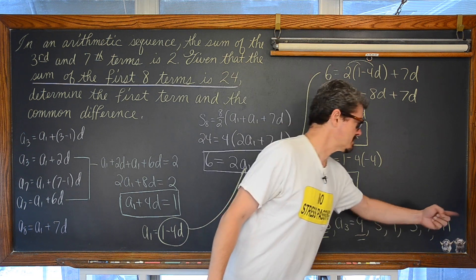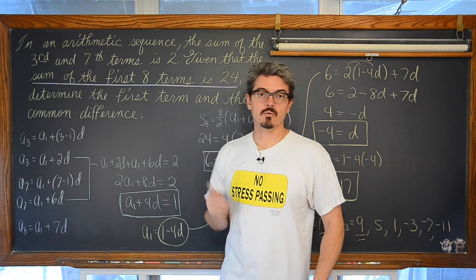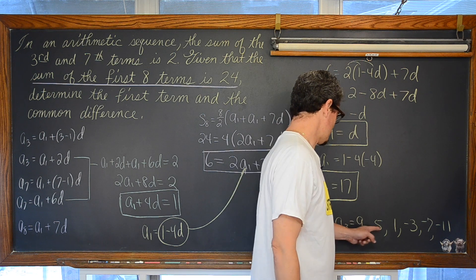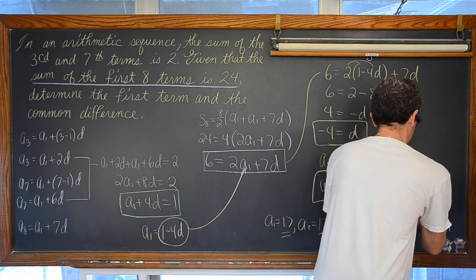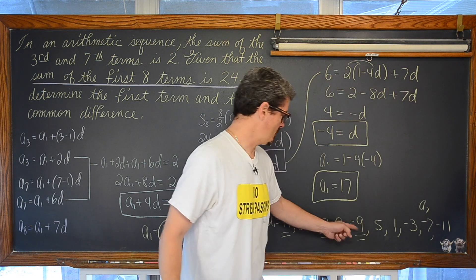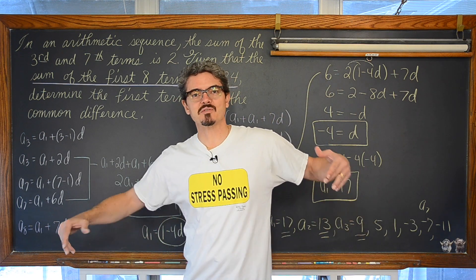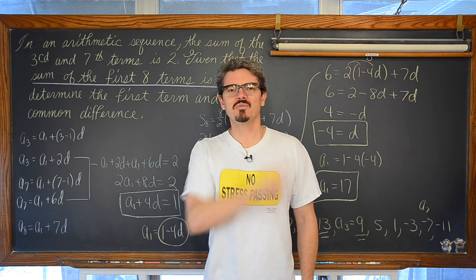Now you can add up these terms and make sure that you get the 24 that it is. Let's add the third and the seventh term. We have 9 plus negative 7 is 2. And we have checked our answer. I am Mr. Tarrou. BAM! Go do that homework!